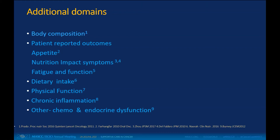Fatigue and function are important domains, as are dietary intake and physical function. We should also consider additional tests such as biomarkers and markers of chronic inflammation, such as CRP, which have been shown to predict prognosis and survival.